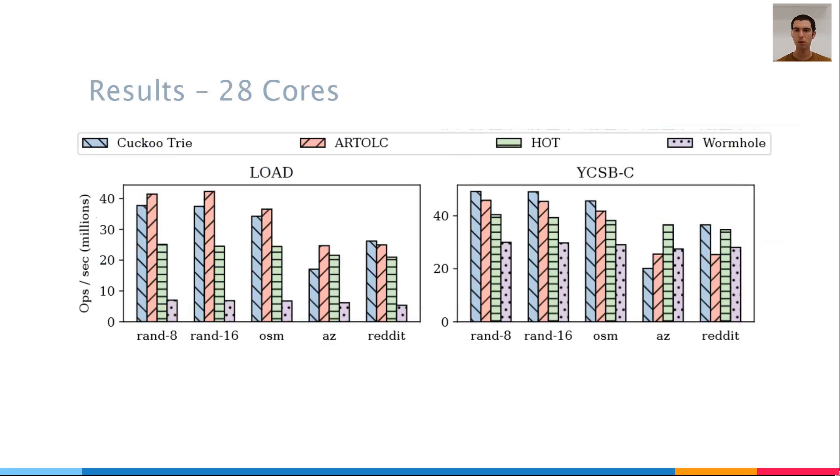Now we'll show some results about the performance of the cuckoo trie. These graphs show the performance of the cuckoo trie, and a few other trie-based indexes, on different datasets. The datasets represent different types of keys, and each one is a few gigabytes in size. The left graph is for insert operations, and the right one is for lookup operations. In both graphs, we used 28 cores to run the indexes. We can see that the cuckoo trie has insertion throughput that is comparable to that of the best index, and a better lookup throughput.